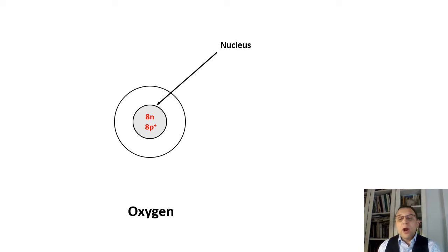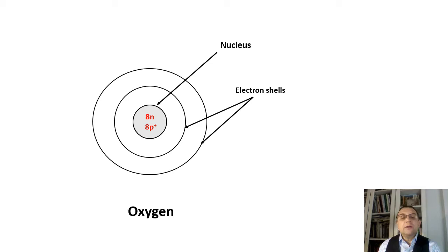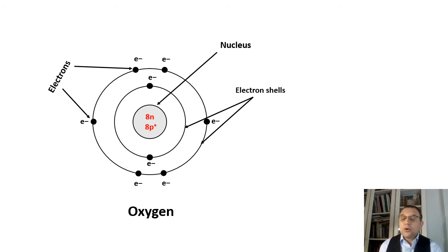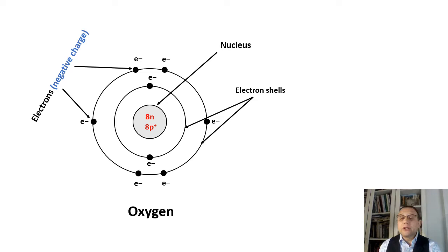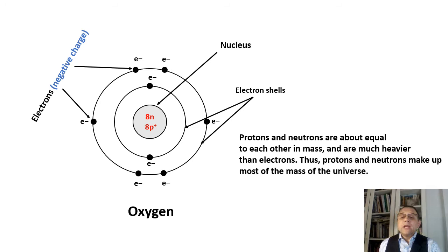What we draw around the nucleus is the electron shell. Oxygen has two electron shells, and on each electron shell we find electrons. Electrons carry a negative charge. What you see here is an electron cloud around the nucleus — these electron shells make up the electron cloud. Protons and neutrons are about equal to each other in mass, and are much heavier than electrons. Thus protons and neutrons make up most of the mass of the atom.